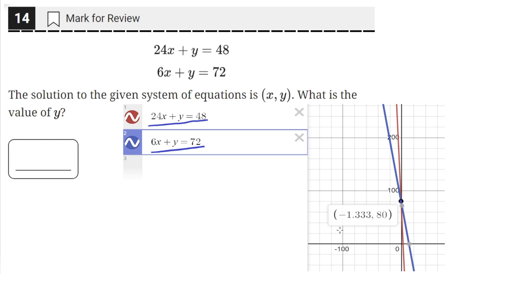And we can look at the point of intersection. So when you click on the point of intersection, it'll give you the coordinates. So we have negative 1.333 repeating. So that's the x value. And then the y value is the second coordinate, the 80.